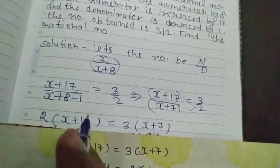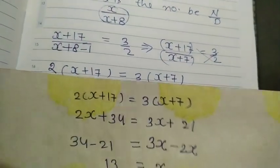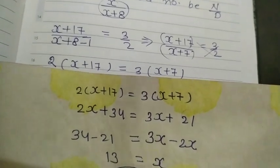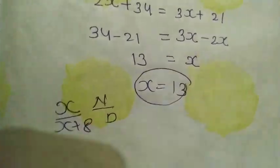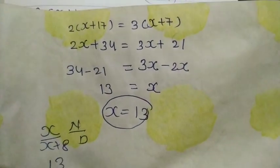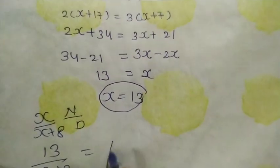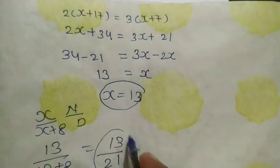So here X equals 13. Our original number will be X upon X plus 8. Here this is numerator and this is denominator. So we will put the value of X in this rational number. Here X equals 13, and 13 plus 8 equals 21.